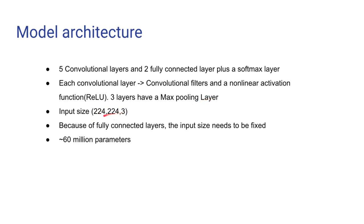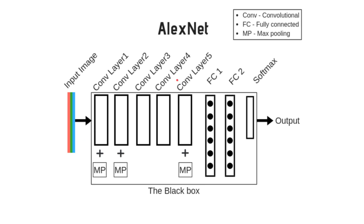Out of these five, three layers are followed by a max pooling layer. The input size is fixed to 224 by 224, and since we are using fully connected layers we need to fix this input size. It has a whopping number of 60 million parameters, so definitely GPU aided a lot for this performance. The architecture in the paper is slightly confusing for beginners, so I made a simplified diagram.